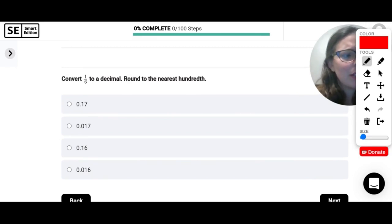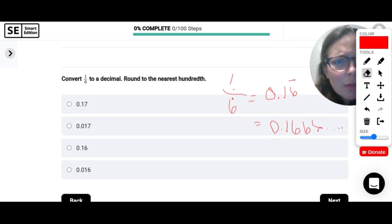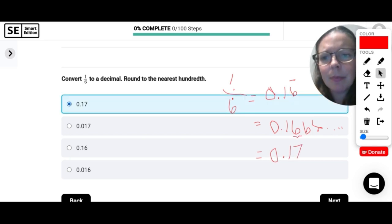Convert 1 sixth to a decimal and round to the nearest hundredth. So remember, fractions are really just division. So 1 divided by 6. Go ahead and plug that in. And you should get 0.16 repeating. So what this means is 0.1666... the 6 should repeat. So if you plug that in your calculator, see if you get the same thing. And then from here, if I need to round to the nearest hundredth, this would be 0.1 is my tenths place. I need to round this. So it's going to round up to 0.17.